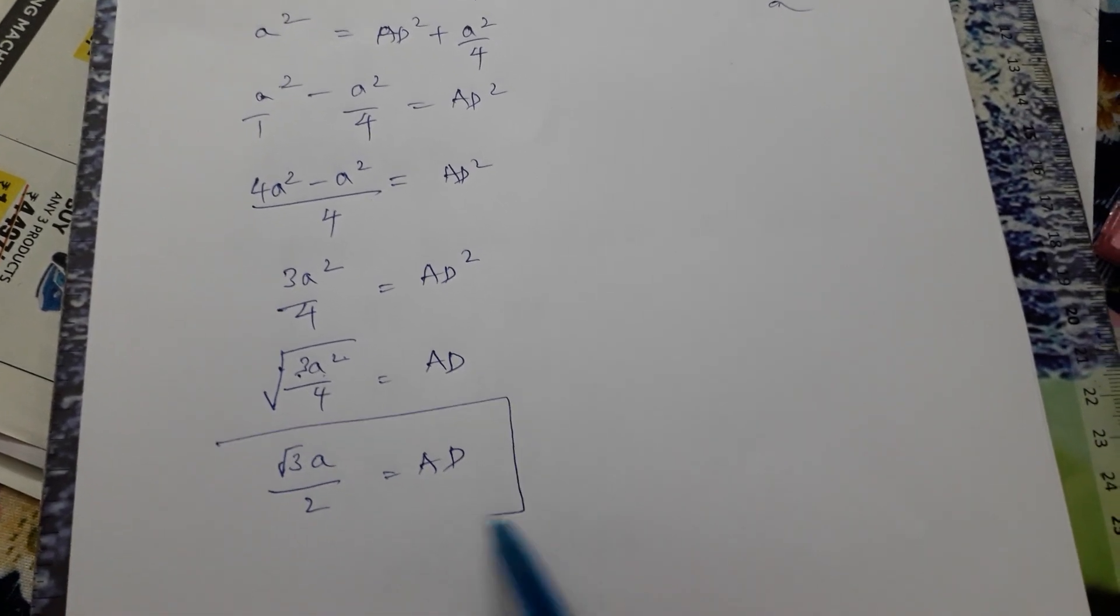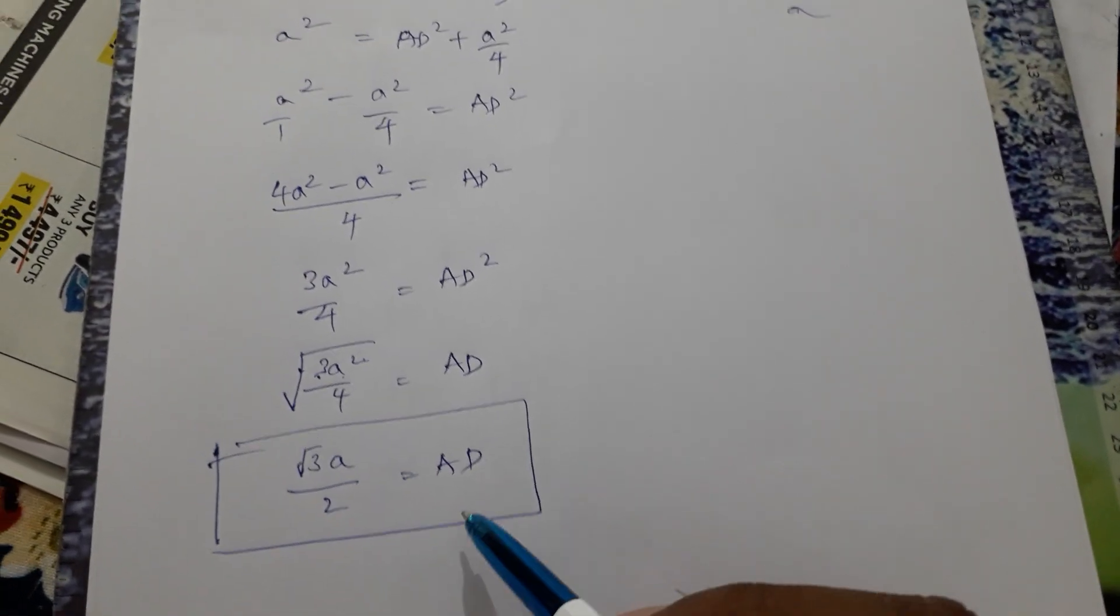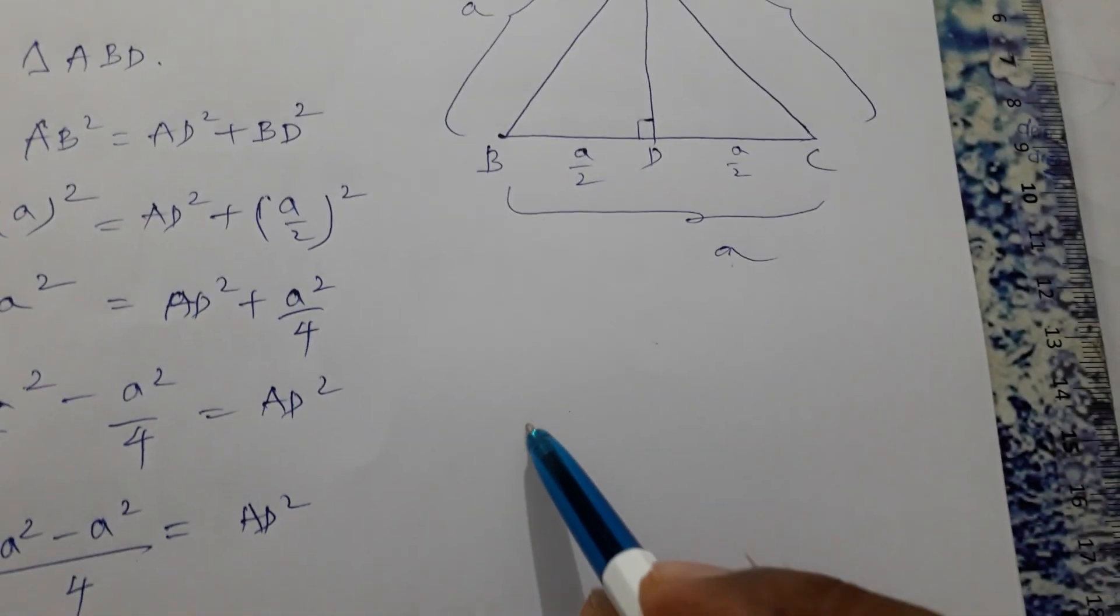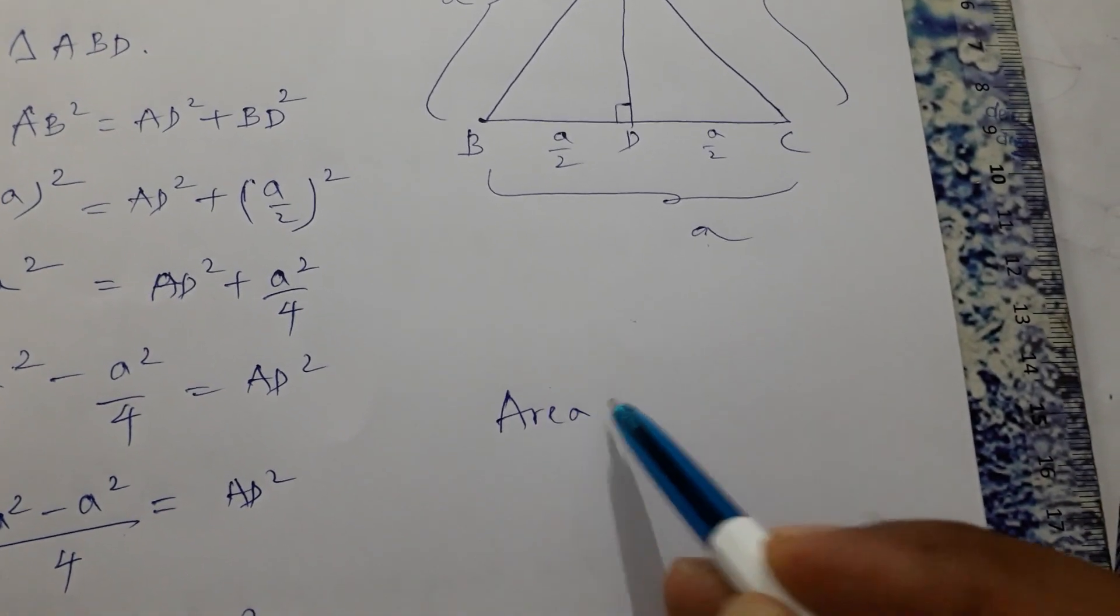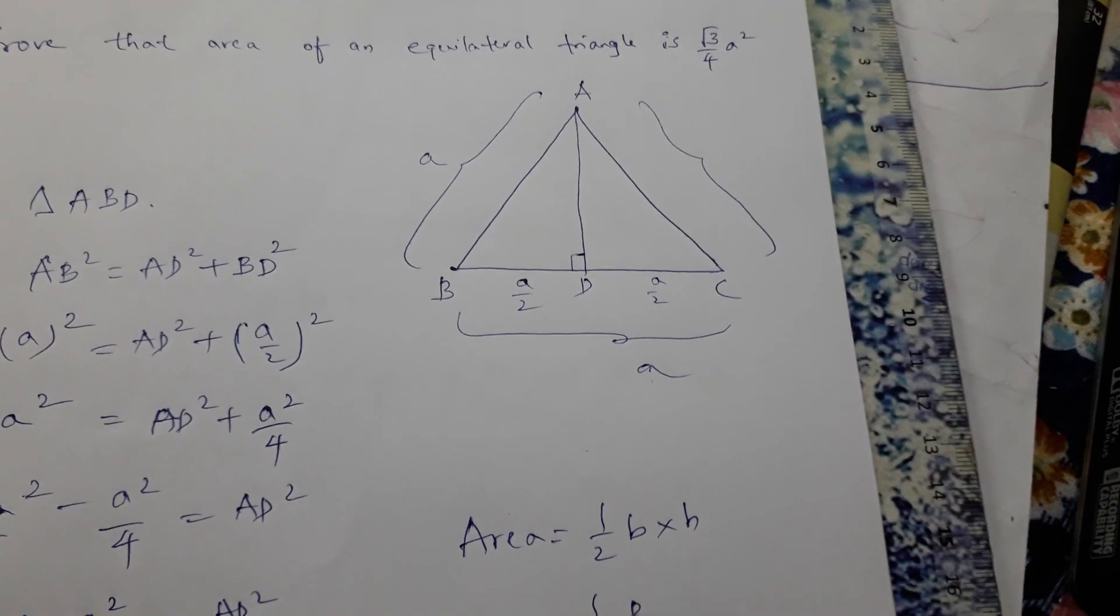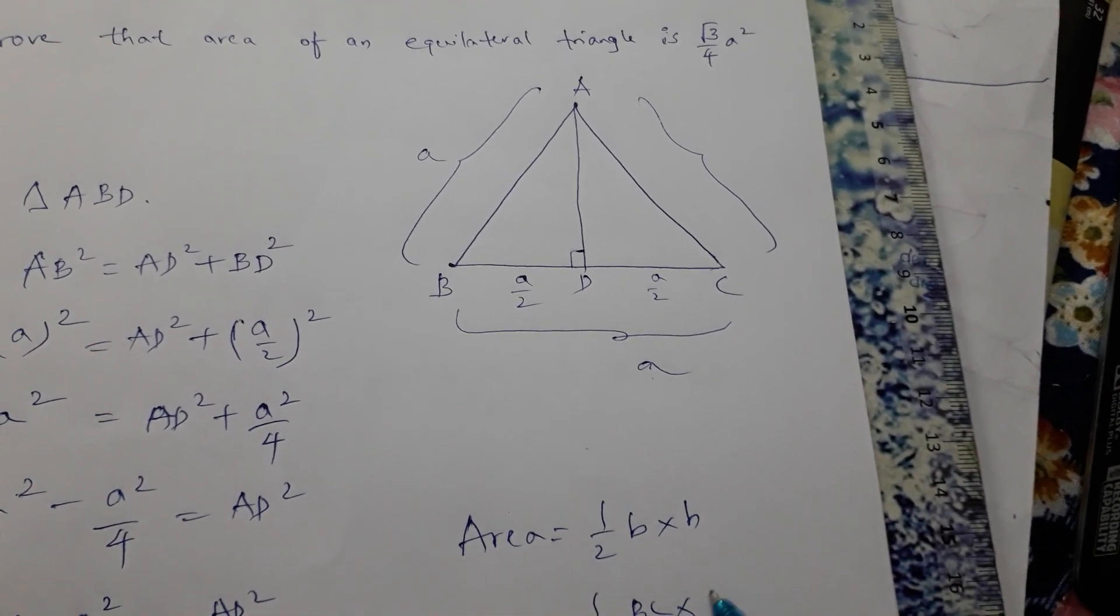If they asked for altitude of an equilateral triangle, this is the answer. But they are asking for area. Area of triangle is half base into height. For this, base you can take as BC and height as AD.